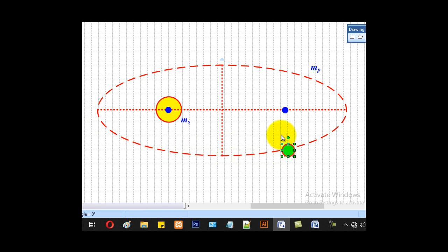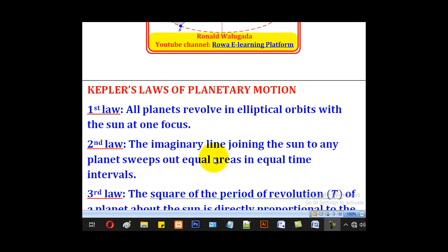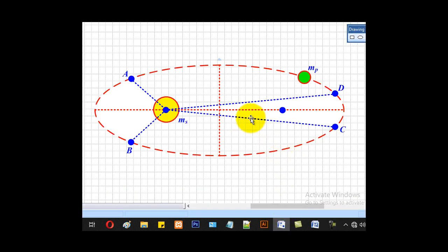The second law states that the imaginary line joining the sun to any planet sweeps out equal areas in equal time intervals. Let's illustrate that. This is a planet. It revolves around the sun in that orbit.